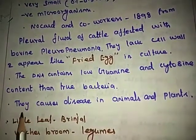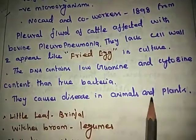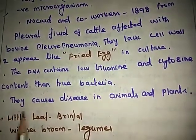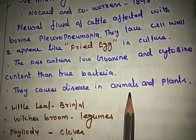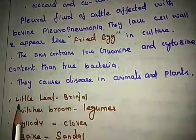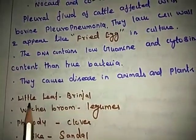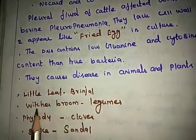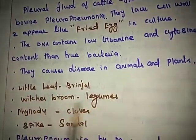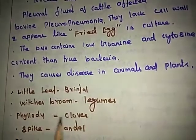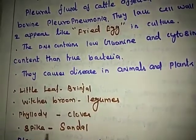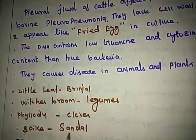Mycoplasma causes diseases in animals and plants. Plant diseases include little leaf of brinjal, witches' broom of legume plants, phyllody of clover, and spike disease of sandal tree.